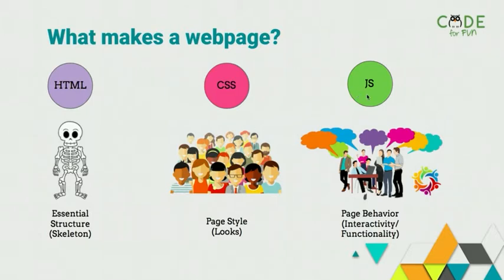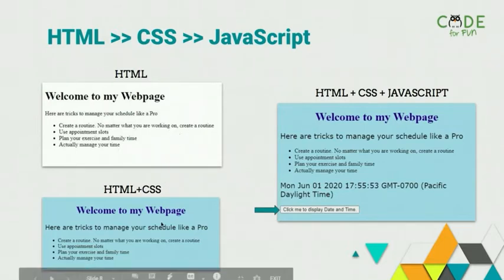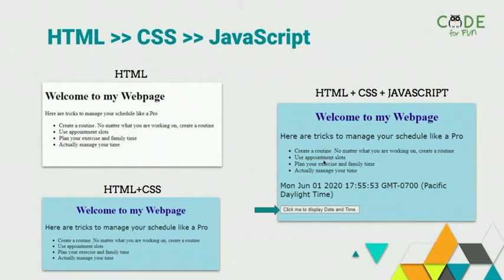And lastly we have JS or JavaScript. This is used to add functionalities - you can add animations and interactivity to your web page. We won't be covering CSS and JavaScript in our intro session. Our main focus would be on HTML. Here's a good example of what a web page looks like with all three. HTML is a blueprint to the website with the essential structure. We then add CSS to change the background color, fonts and style the web page. Finally JavaScript lets us add interactive elements such as a button that displays a real date and time, making our website more interesting and advanced.